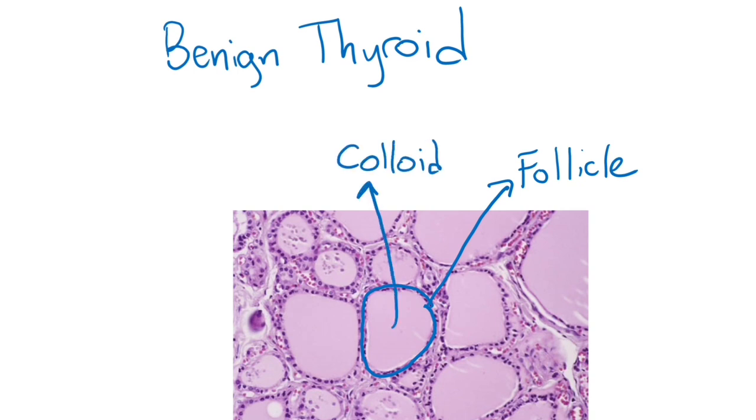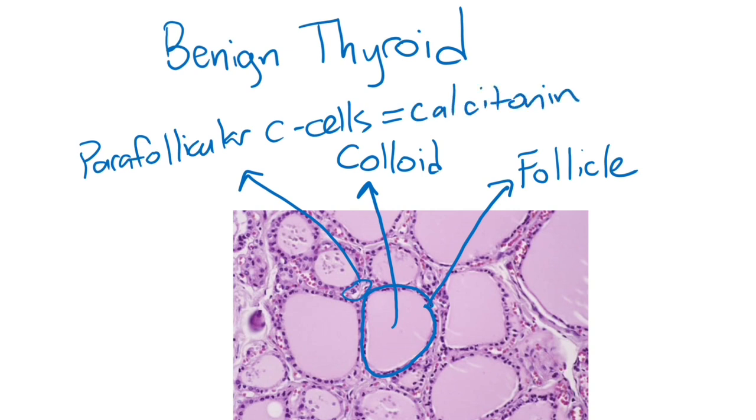As always, let's start with anatomy. The microscopic anatomy of the thyroid is the follicle, colloid, and the parafollicular C cells that make calcitonin. The parafollicular C cells migrate from the neural crest.